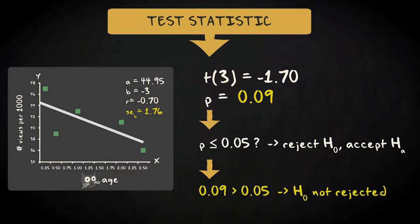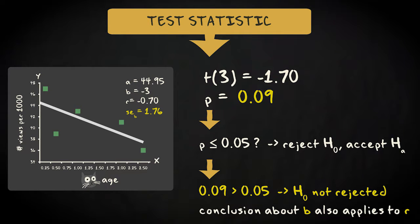Interestingly, the result of this test also applies to the correlation. If we can conclude that the regression coefficient is significantly different from 0, then so is Pearson's R. This makes sense because the regression coefficient is simply an unstandardized version of the correlation coefficient.